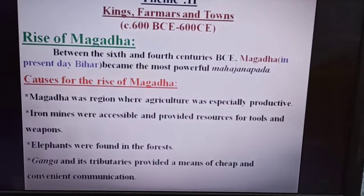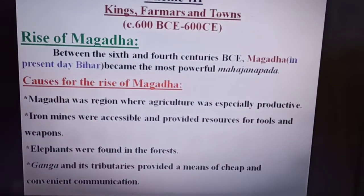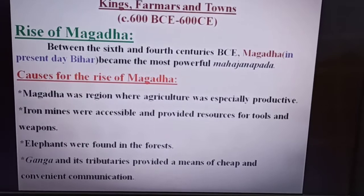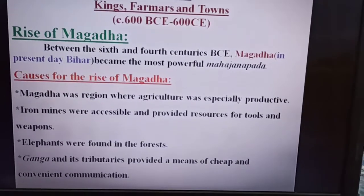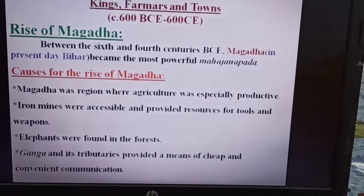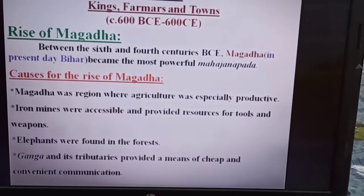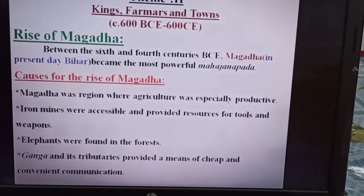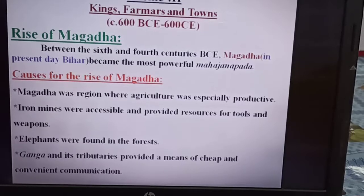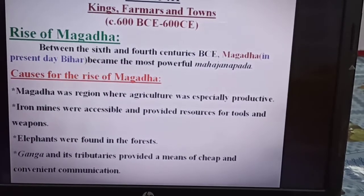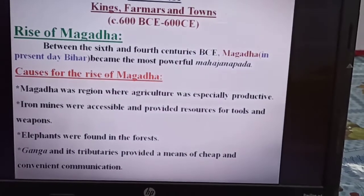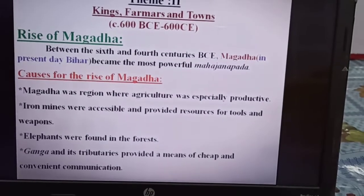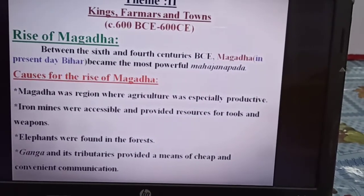Between the 6th and 4th centuries BCE, Magadha became the most powerful Mahajanapada. The causes for the rise of Magadha: first, Magadha was a region where agriculture was especially productive. Second, iron mines were accessible and provided resources for tools and weapons.